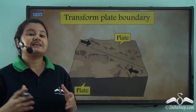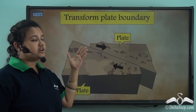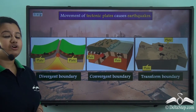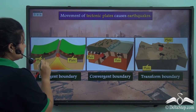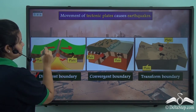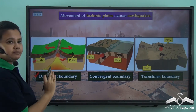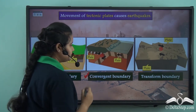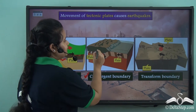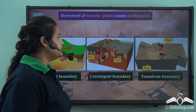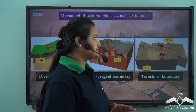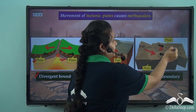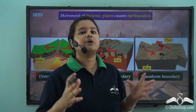If two tectonic plates slide past one another, then it is known as a transform plate boundary. So the movement of tectonic plates is of three types. The first is divergent plate boundary, where two tectonic plates move in opposite directions. The second is convergent plate boundary, where two tectonic plates come closer or collide with one another. The third is transform plate boundary, where two tectonic plates slide past each other.